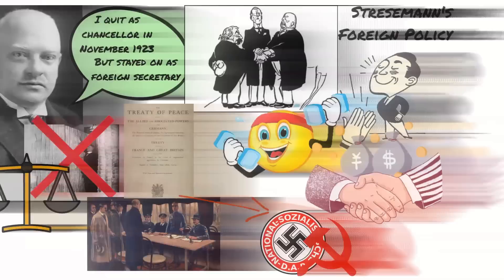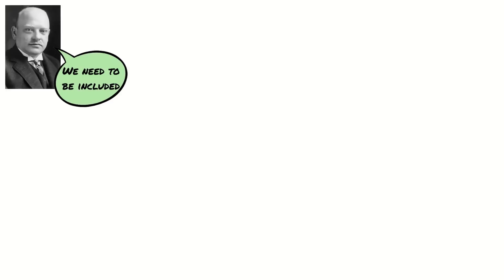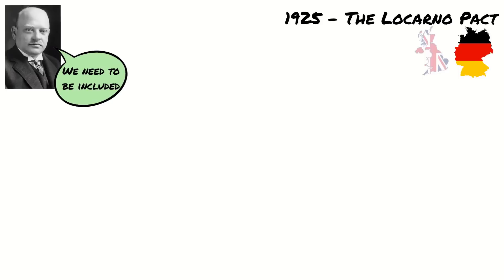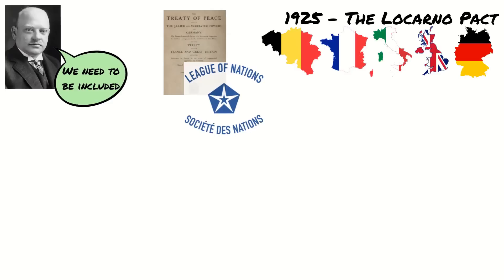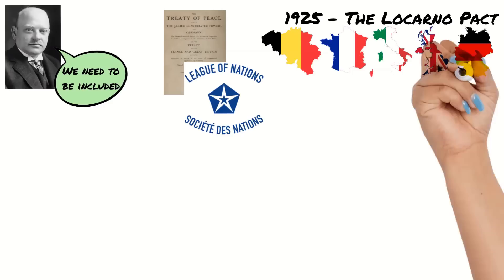Stresemann set out to ensure that Germany was part of any important international pacts or treaties. In 1925 he was able to negotiate Germany's place in the Locarno Pact. This was an agreement between Britain, Italy, France and Belgium. It mainly cemented some of the terms of the Treaty of Versailles, but it also agreed that Germany could apply to become a member of the League of Nations, which had been banned under the treaty. Additionally, unlike the Treaty of Versailles, Germany had a say in its terms. It had a couple of key features.